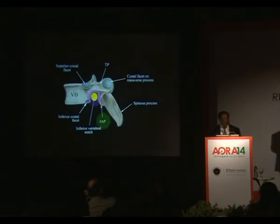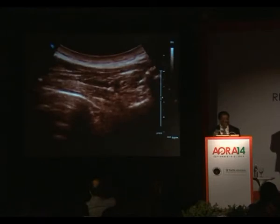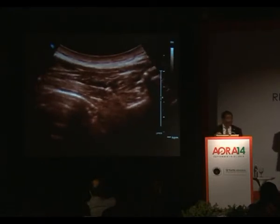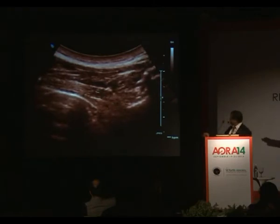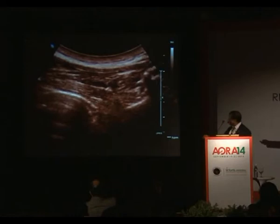The intervertebral foramina is through which the nerve emerges. So if I can insonate the articular process, then I can see the paravertebral space. We have performed these scans and done these techniques. Now, where is the shadow? It has disappeared. You are able to see the articular process, the thick ligament, and the internal intercostal membrane laterally. This is the parietal pleura, and this is the triangular paravertebral space.